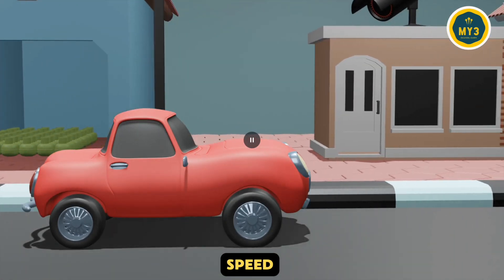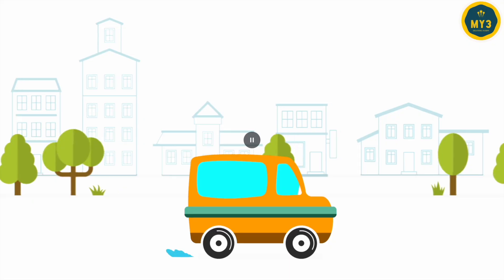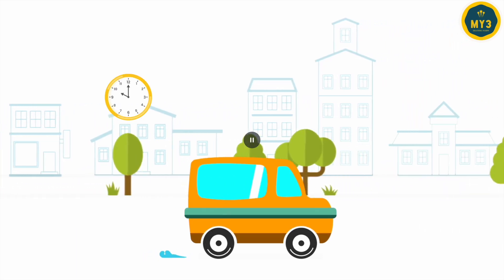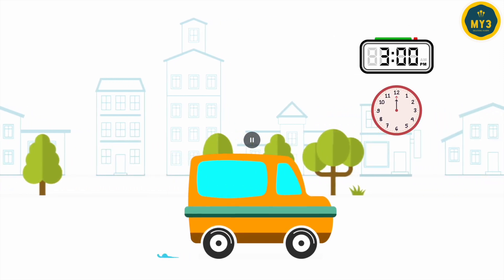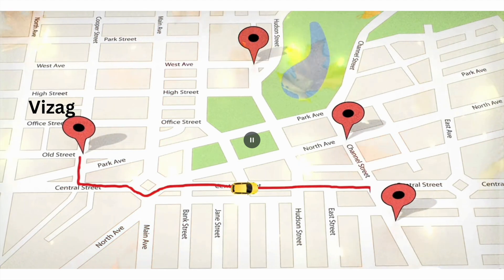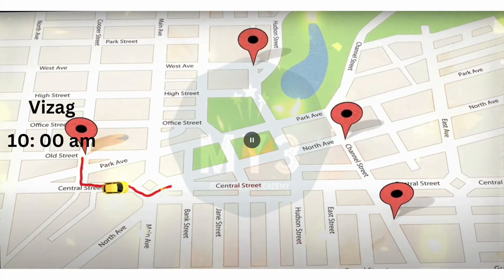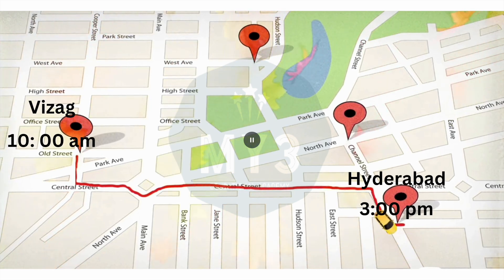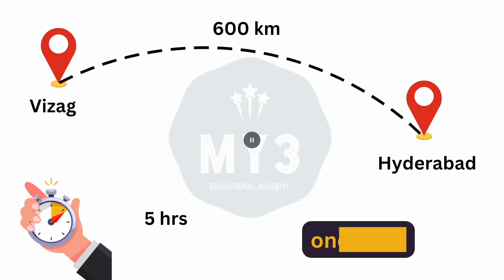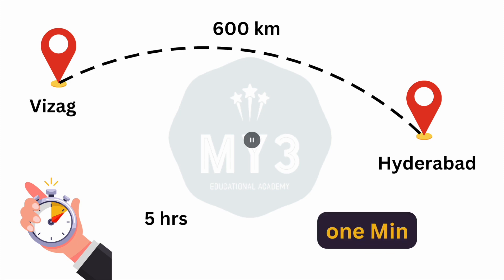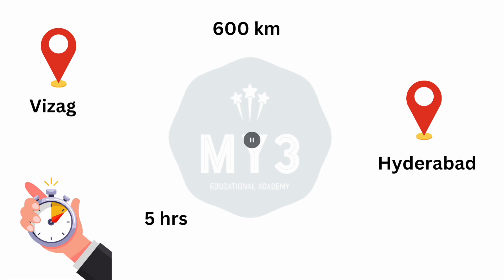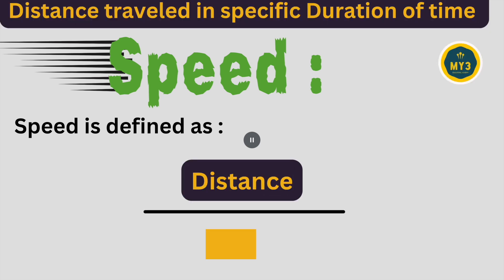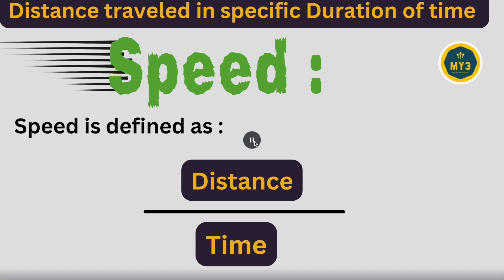How can we define speed? Speed is nothing but distance covered in a specific duration of time. Suppose you are wise to travel to Hyderabad — starting at 10 in the morning and reaching at 3 in the afternoon, that is 5 hours of travel. That means 600 kilometers distance in 5 hours of travel. So speed is given as distance covered in a specific duration of time, with the formula: speed = distance divided by time.